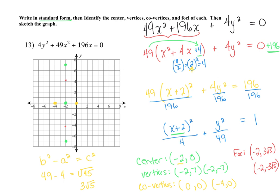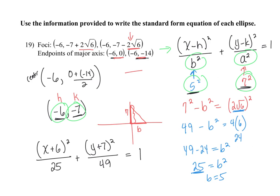So you want to finish by sketching the ellipse to actually graph it. When working through these problems, use all of your information and logic. The major axis gives you one value of the center; the other you average to find. Once h and k are solved, use the given information to find the remaining pieces and solve back for the values you need.